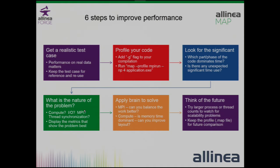To profile your code with Alinea MAP, it helps to add the -g flag to your compilation. That way you can get line-number information - it won't change the speed of your code, but it will let you see what lines your performance issues are happening on. Then all you need to do is 'map --profile mpirun' with your existing mpirun line, and it will create a profile. Or you can do it all in the GUI, as I'll show later.